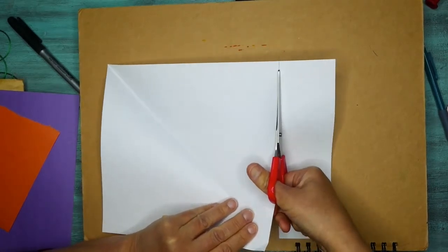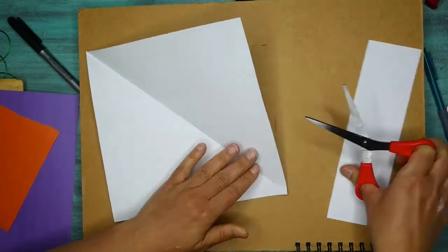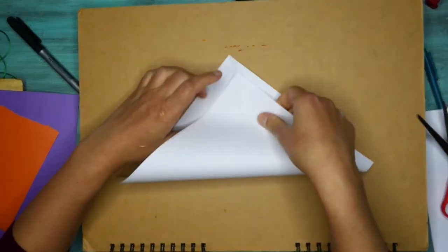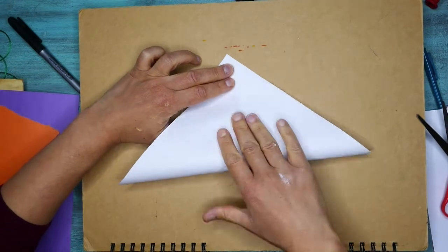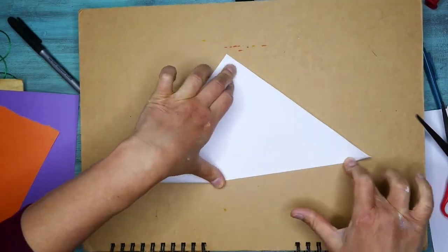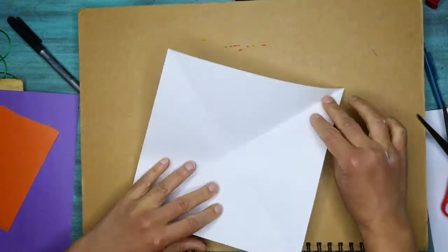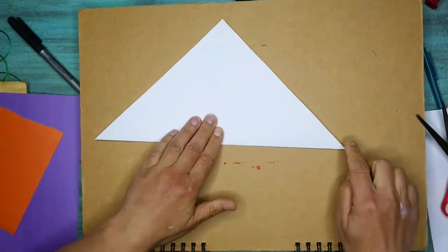So we're going to do a series of folds. Try and be as careful and precise as you can. I'm going to fold up in the other direction to make another triangle, and I'm just going to lift those two corners.